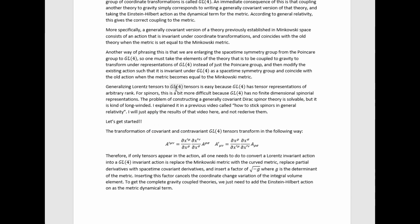Generalizing Lorentz tensors to GL4 tensors is easy because GL4 has tensor representations of arbitrary rank. For spinners, this is a bit more difficult because GL4 has no finite-dimensional spinorial representations. The problem of constructing a generally-covariant Dirac spinner theory is solvable,